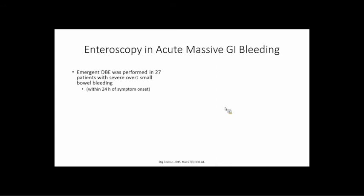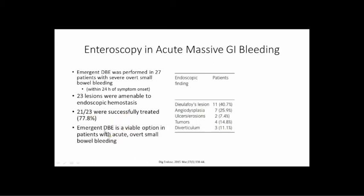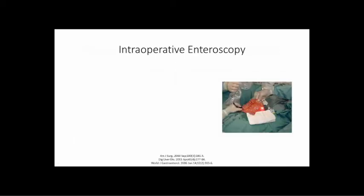If the angiogram is negative, we can go back to enteroscopy or surgery. Enteroscopy in massive bleeding does have a role. One study of 27 patients undergoing emergent enteroscopy for small bowel bleeding found mostly vascular lesions — 23 lesions were amenable to endoscopic therapy and 21 out of 23 were successfully treated. The authors concluded emergent enteroscopy is another option if angiography is not desired or the patient has kidney disease. However, you may need more than one procedure — some patients needed as many as four enteroscopies — and re-bleeding rates remain relatively high, about a third.